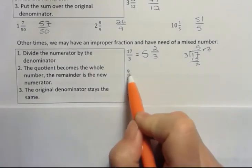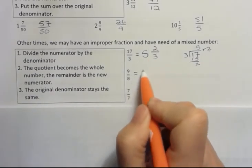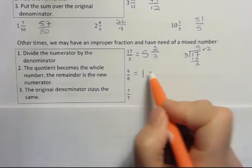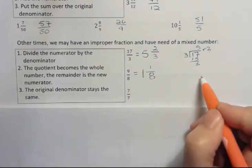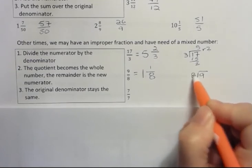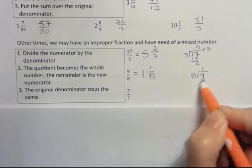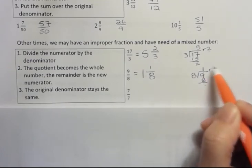Okay, how many times does 8 go into 9? It goes one time with how many left over? 1. And then the denominator stays the same. You can always do it off to the side if you need to, to see the quotient and the remainder.